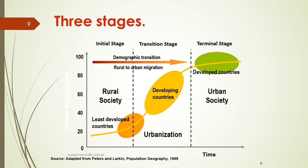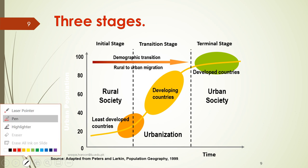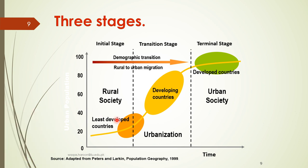If you look at this graph, it shows a rural society in the least developed countries. Then there is the urban society. Countries like Pakistan have also passed through this transition phase, moving from a rural to an urban society.